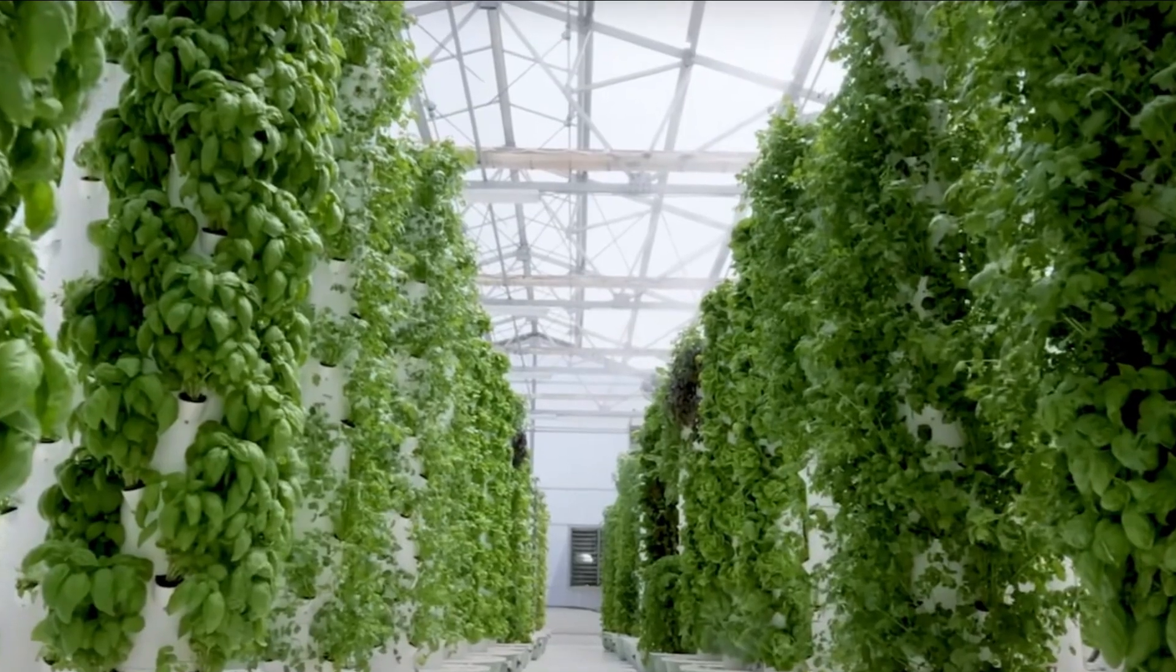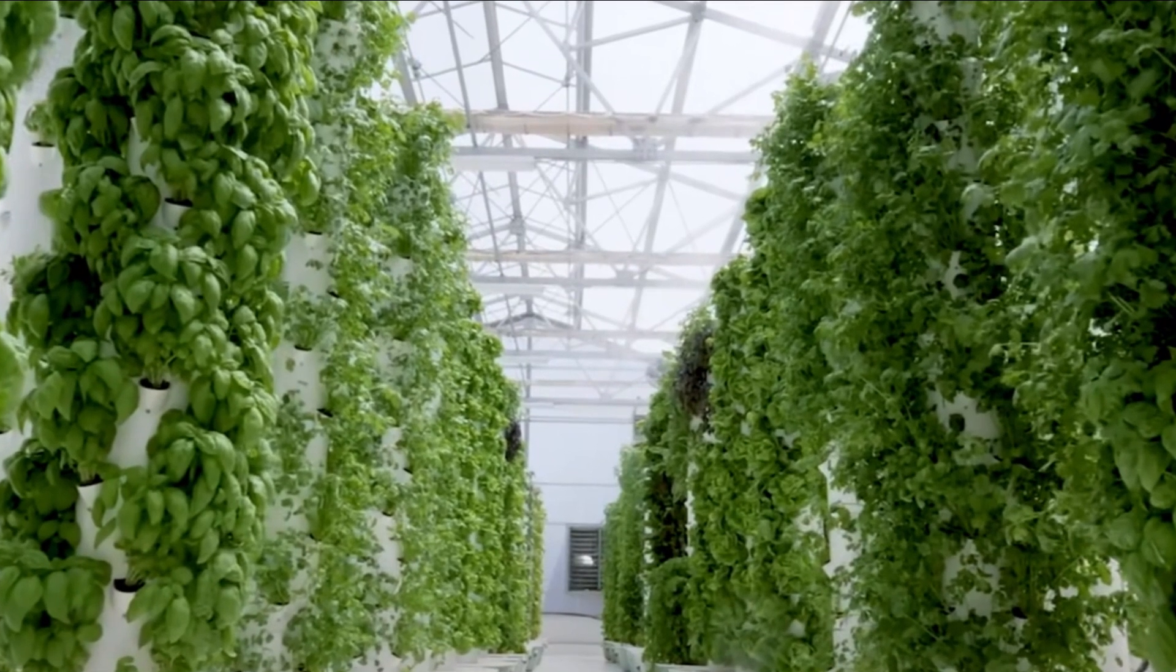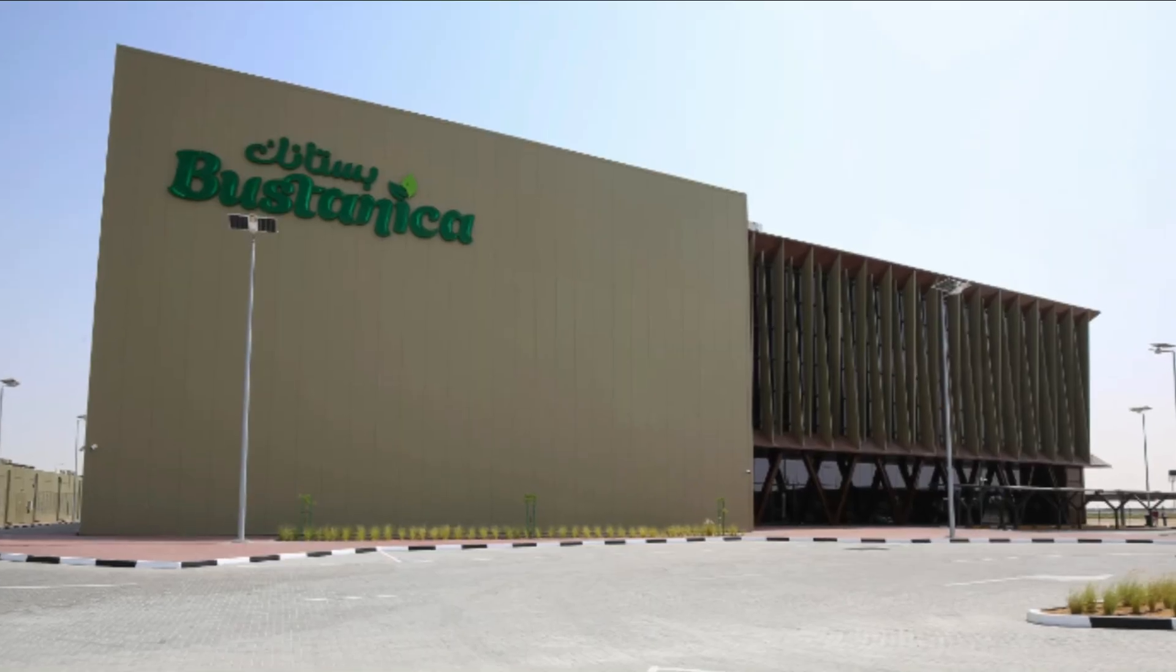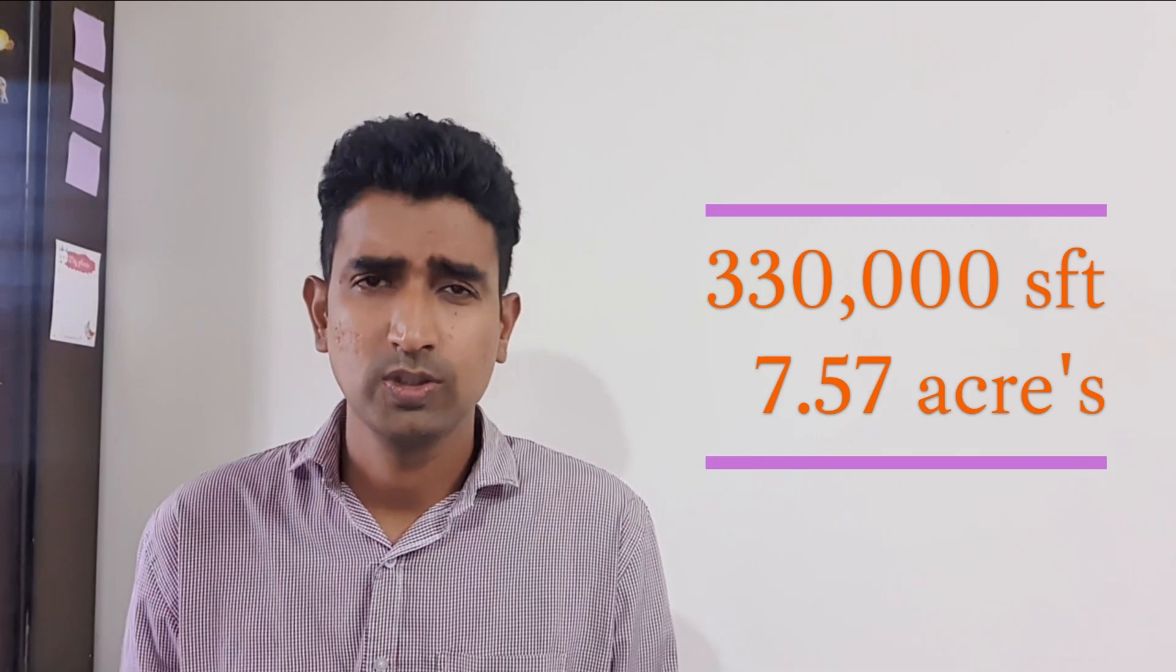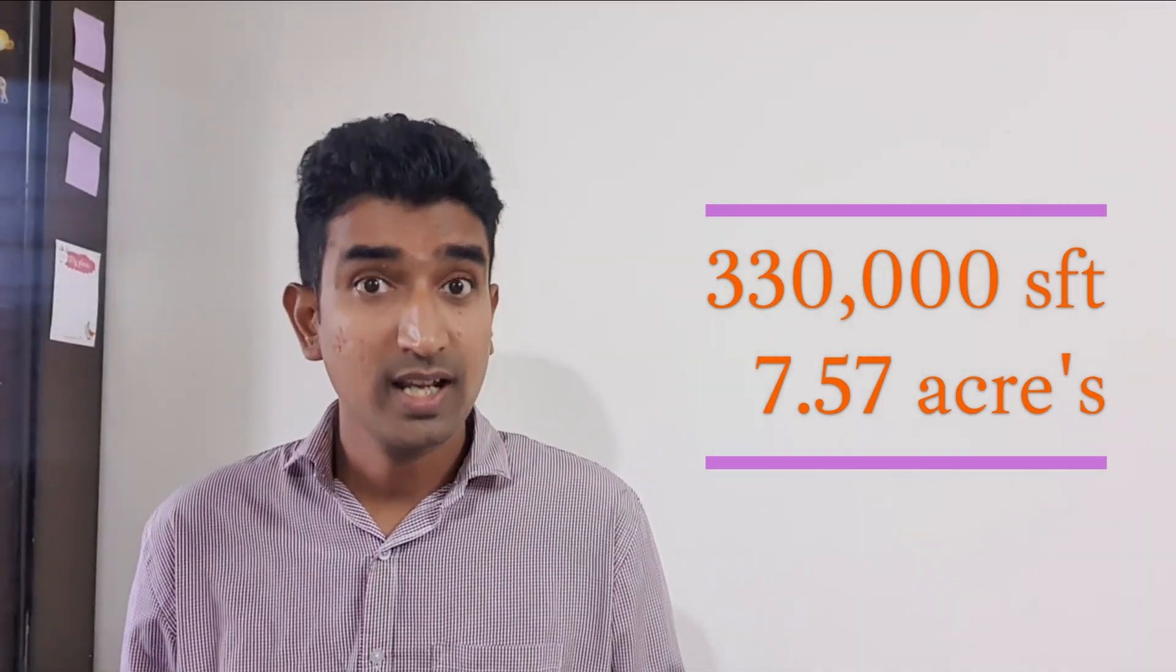To use this vertical farming in the US. The largest vertical farm is in Dubai - Bastanica. This is about 330 square feet and about 7 years old.